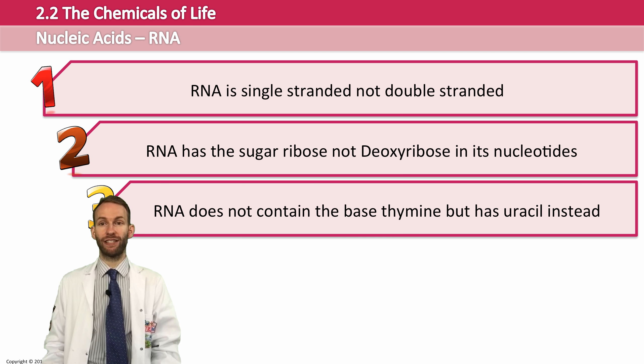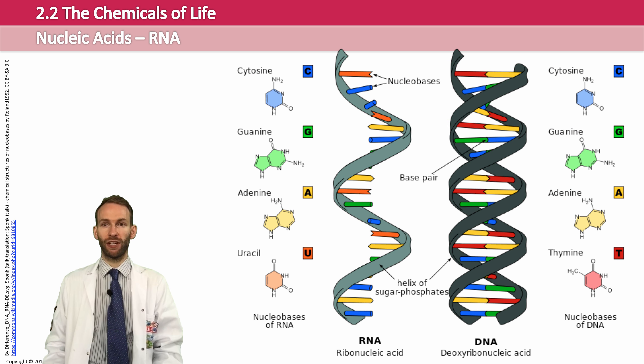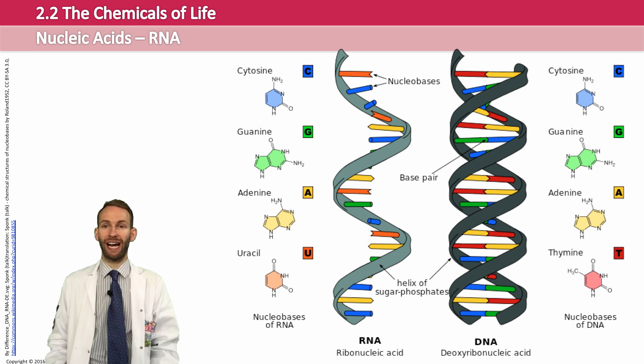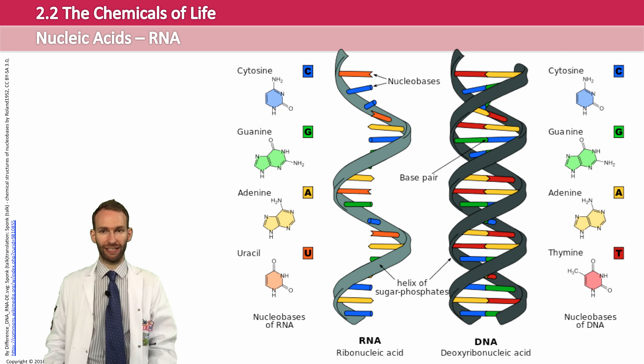RNA does not contain the base thymine. It contains uracil instead. So, while in DNA, you had adenine, thymine, guanine, and cytosine, in RNA, you have adenine, guanine, and cytosine, but then you have uracil instead of thymine.